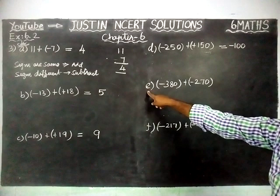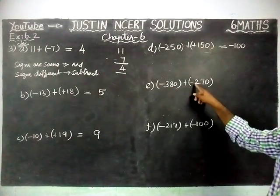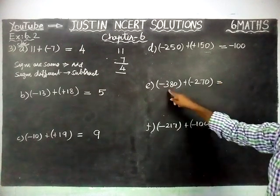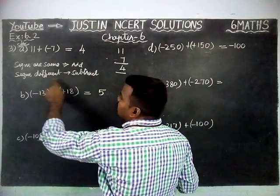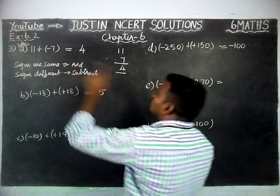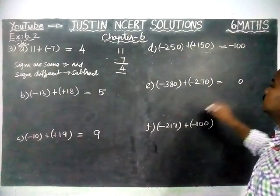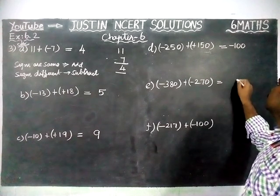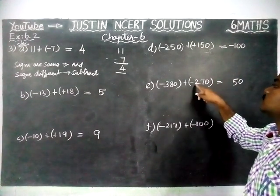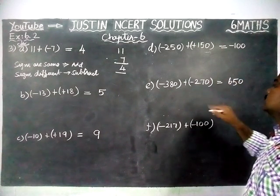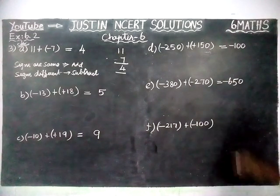Next, part E: minus 380 plus minus 270. Here the signs are the same — both are minus. So, first we have to add these two numbers. 0 plus 0 is 0; 8 plus 7 is 15, carry 1; 3 plus 2 is 5, plus 1 is 6. Both also have a minus sign, so I am writing minus. The answer is minus 650.